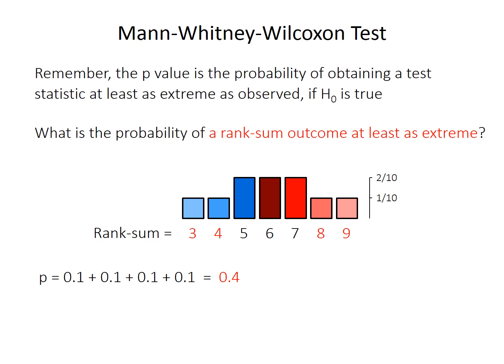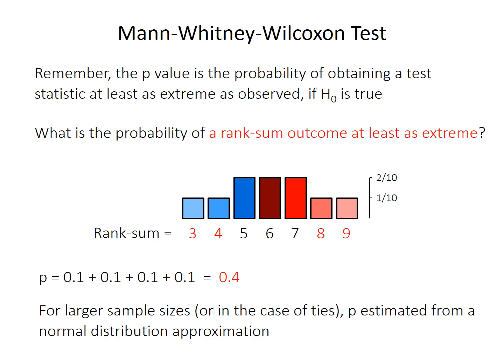This example had a very small sample size — in fact, it's impossible to get a p-value less than 0.2 here. In the case of larger sample sizes, or when there are many duplicate values (ties), the p-value is approximated rather than calculated exactly.